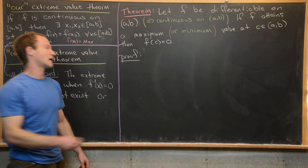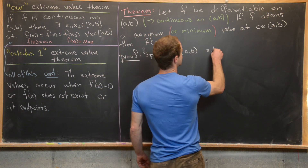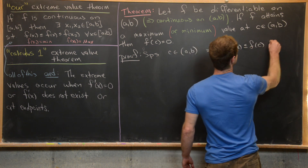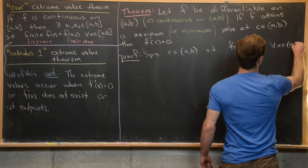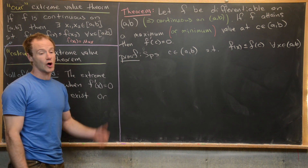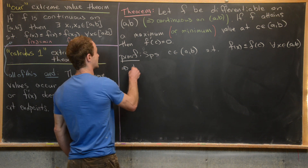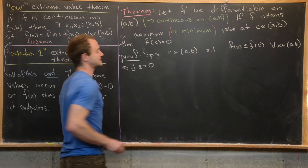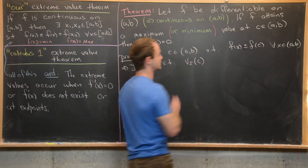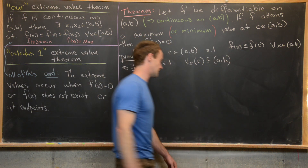Here's what I want to do. Suppose that we have c in (a, b) such that f(x) ≤ f(c) for all x in (a, b) — in other words, we have a maximum at c. Now notice that the interval (a, b) is an open interval and thus an open set, so there exists some ε > 0 such that the ε-neighborhood V_ε(c) is totally contained in the open interval (a, b).